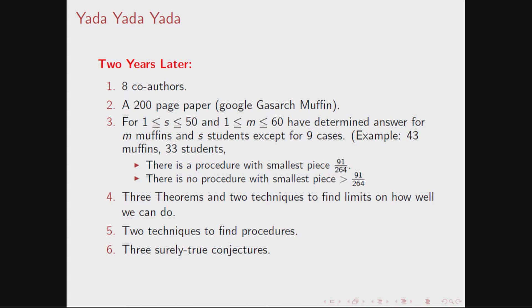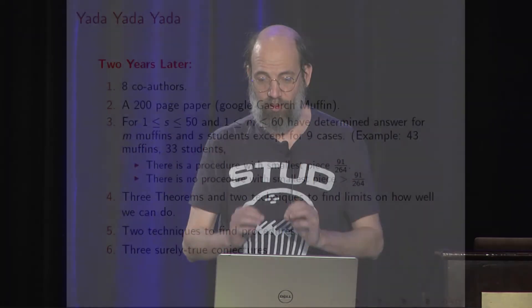Here's an example, though, of how bizarre the answers are. 43 muffins, 33 students. There is a procedure, smallest piece 91 over 264. So there is a procedure, smallest piece 91 over 264, but you can't do better than that. We have three theorems and two techniques to find limits on how well you can do. We have techniques and procedures, and we have three surely true conjectures.